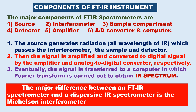The instrument also includes an amplifier, analog-to-digital converter, and computer. In the animation, only one wavelength was shown for simplicity, whereas in an actual experiment, IR radiation of all wavelengths in the IR region passes through the interferometer, then the sample and detector. The signal is amplified and converted from analog to digital. Finally, the signal is transferred to a computer where Fourier transform is carried out to produce the IR spectrum.